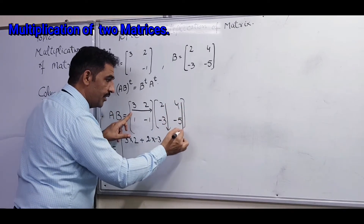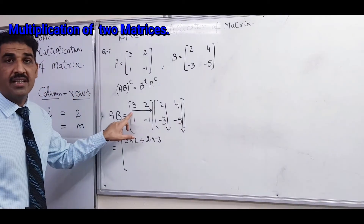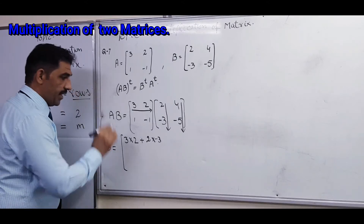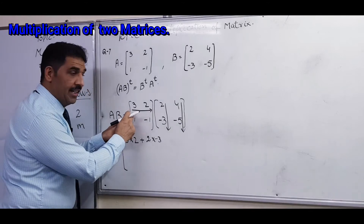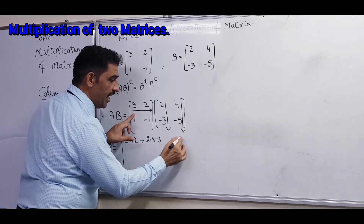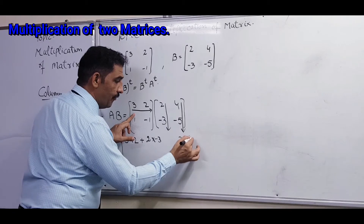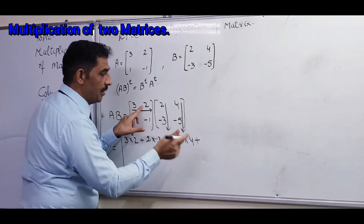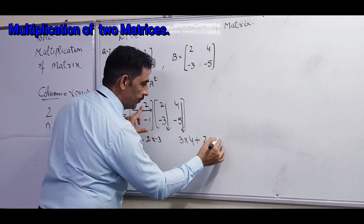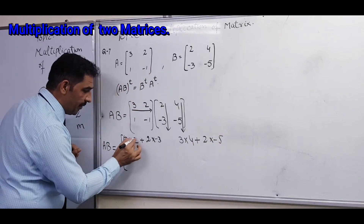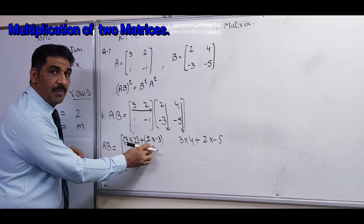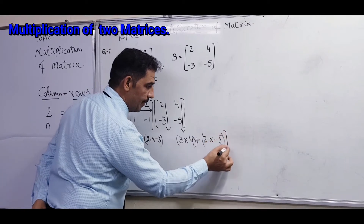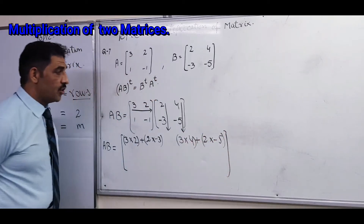When a row multiplies by one column, we get one element of the required matrix. For the second element, the same row multiplies by the second column. So: 3 times 4 plus 2 times minus 5. If you are confused you can write the bracket to organize the terms.